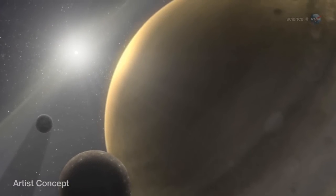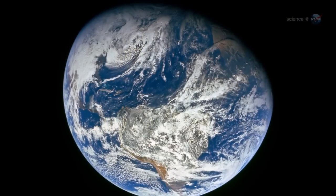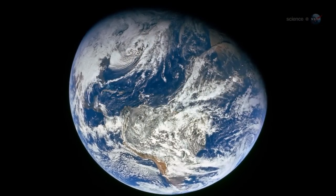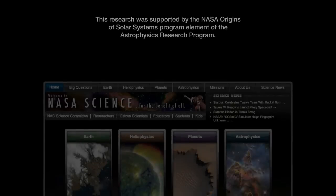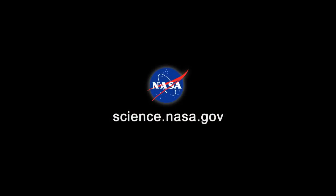One day, he says, our own solar system may end up the same way. In five billion years, the fried planet could be Earth. Until then, for breaking science news, stay tuned to science.nasa.gov.